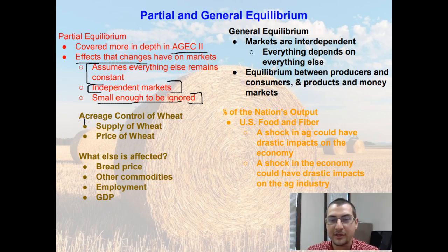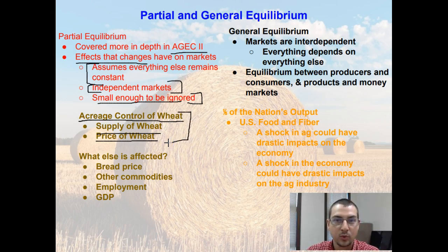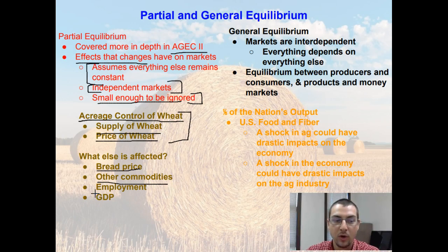Partial equilibrium would look at what would happen if we performed acreage control of wheat — what would happen to the supply of wheat, what would happen to the price of wheat — looking at just one independent market of wheat. We're ignoring what would happen to bread price, what would happen to prices of other commodities, and what would happen to employment or GDP.